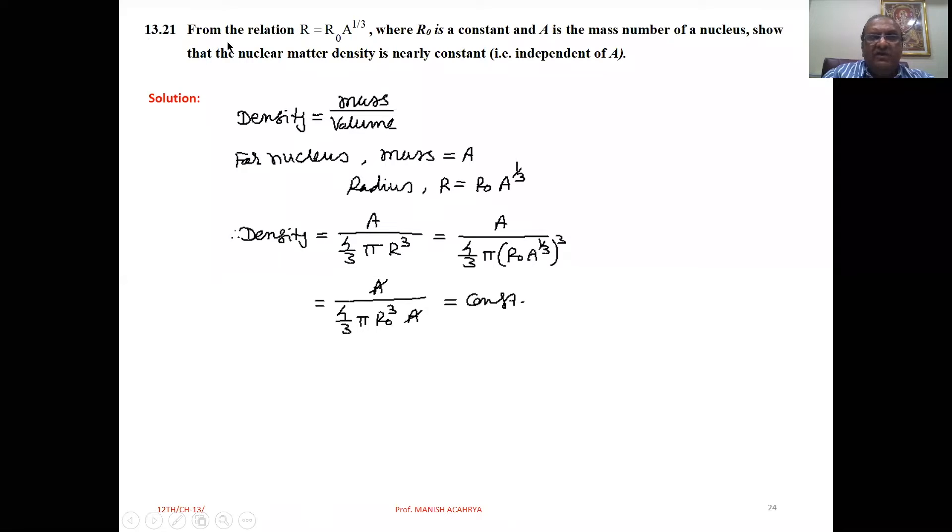Next, problem 13.21. From the relation r equal to r0 a raised to one third, where r0 is a constant and a is the mass number of nucleus, show that the nuclear matter density is nearly constant, independent of a.